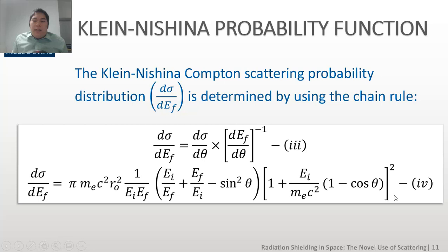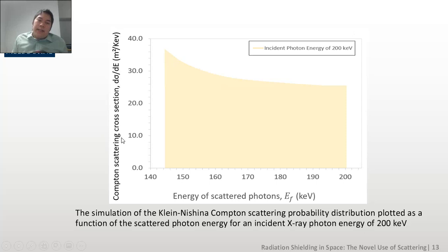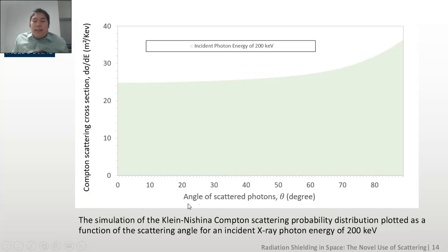So what is the significance of d sigma by d Ef? If d sigma is the area that captures the amount of flux going through the solid angle d omega, then d sigma by d Ef describes the probability distribution of having the highest proportion of scattered photons in a particular segment. Then by using equation 4, d sigma by d Ef, which is the Compton scattering cross section, is plotted first against the energy of the scattered photons Ef for an incident photon energy of 200 kilo electron volts, and then is plotted again against the angle of scattered photons theta for the same incident photon energy.